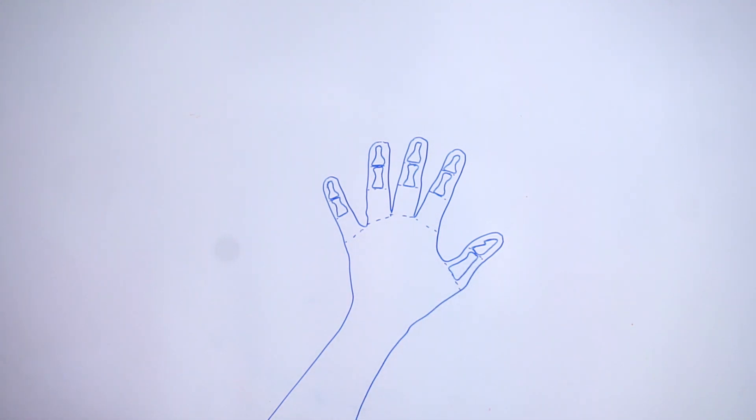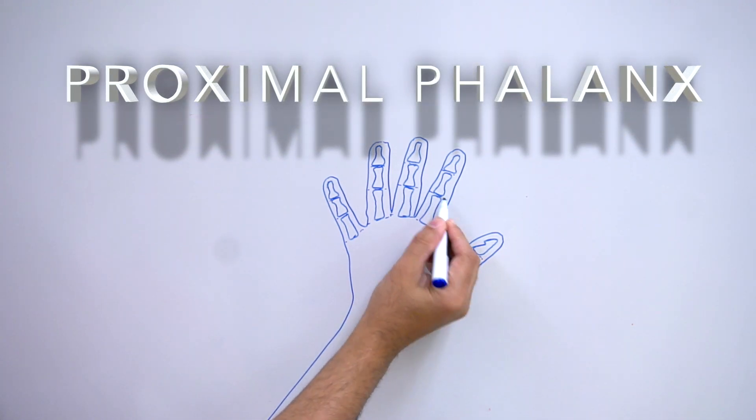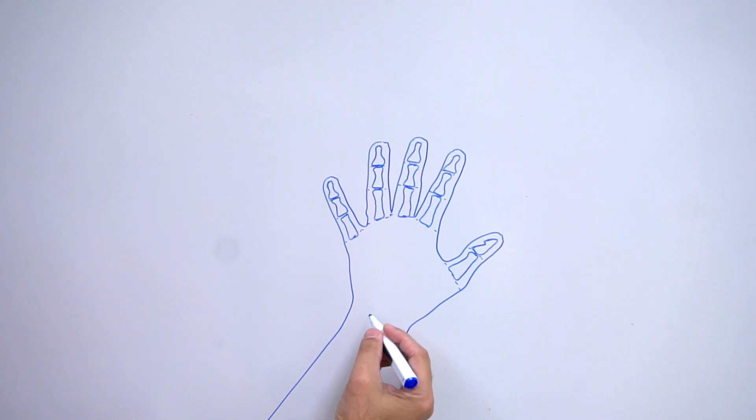All these bones are going to get progressively bigger or longer, just like this one. The next one's going to be even longer. This is called the proximal phalanx. A little bit longer, make it look like bones.